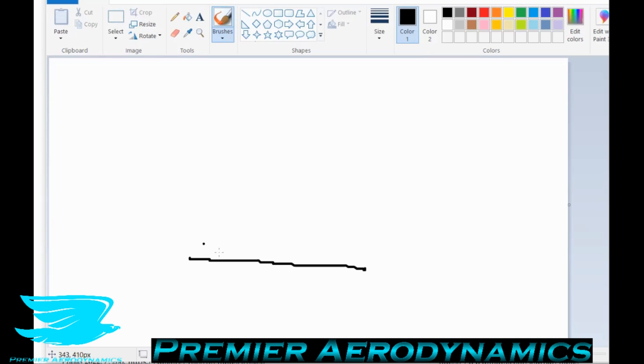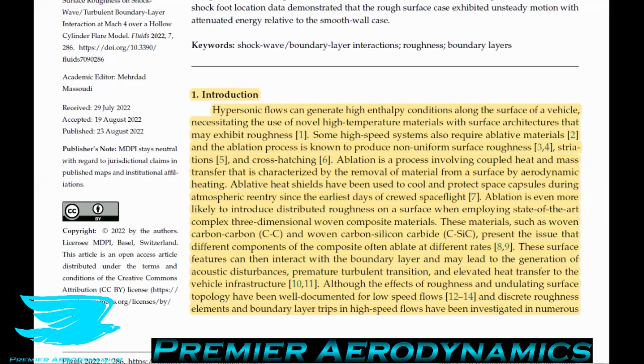You have this material on the outside where all this heat comes in, and then the material itself will start to burn off. And that burning process uses up most of the temperature, most of that energy, that kinetic energy. And the rest of the actual aircraft that you care about is left relatively unaffected. Ablation is a process involving coupled heat and mass transfer that is characterized by the removal of material from the surface by aerodynamic heating. Ablative heat shields have been used to cool and protect space capsules during atmospheric reentry since the early days of crude spaceflight.